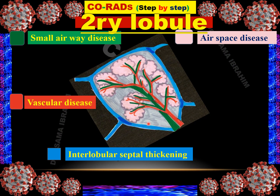This is the secondary pulmonary lobule, which represents the main functional and anatomical unit of the lung. It is composed of central terminal arterioles and terminal bronchioles. The red one is the arterioles and the green one is the terminal airways. If there is pathology in the airways, it represents small airway disease. If there is pathology in the red one, it represents vascular disease. The pink one is the alveoli — we have 15 to 20 alveoli in every secondary pulmonary lobule, and this is called airspace disease if there is pathology there.